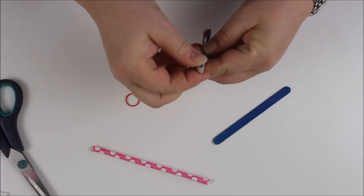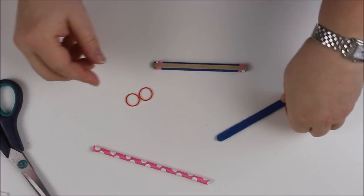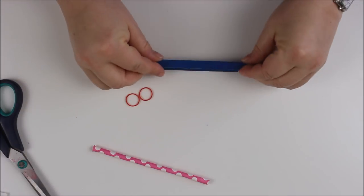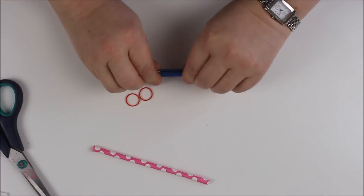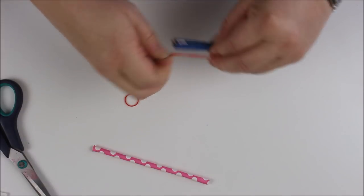So again this is from things that are around the house and then all you do is you pop your other lolly stick on top and then we're going to attach the ends with the smaller elastic bands.